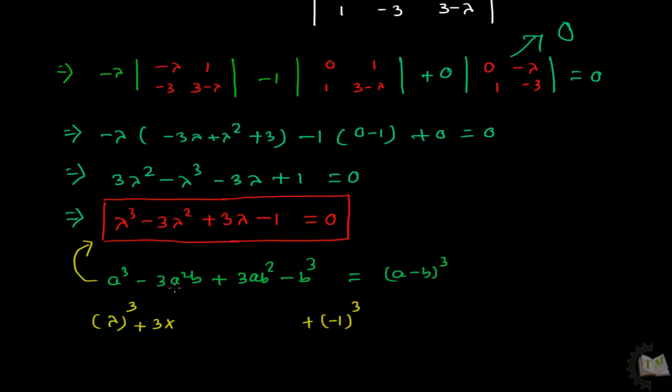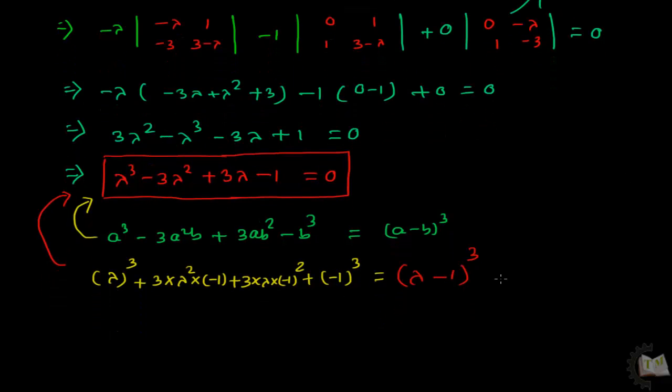So it becomes 3 times lambda squared times minus 1, plus 3 times lambda times (minus 1) squared, plus (minus 1) cubed. This equals 0. If you solve it, you will get 3 values of lambda: 1, 1, 1.